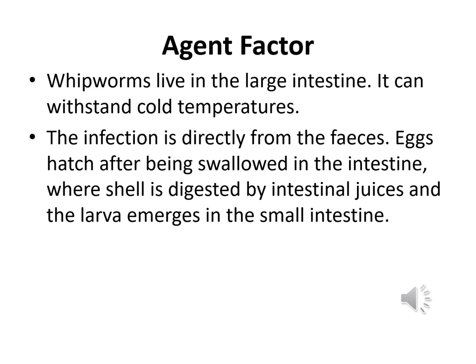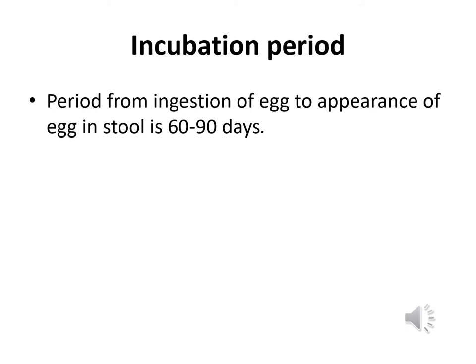Regarding agent factors, whipworms live in the large intestine and can withstand cold temperatures. The infection is directly from the feces. Eggs hatch after being swallowed in the intestine, where the shell is digested by intestinal juices and the larva emerges in the small intestine. The incubation period — from ingestion of eggs to the appearance of eggs in stools — is about 60 to 90 days.